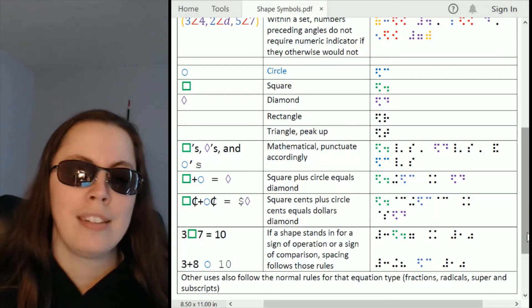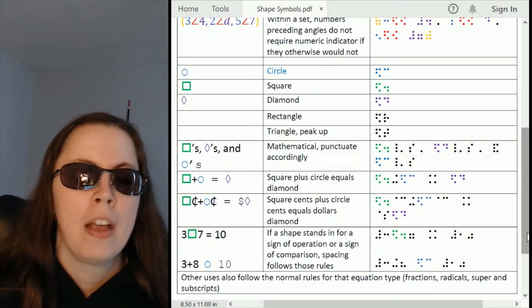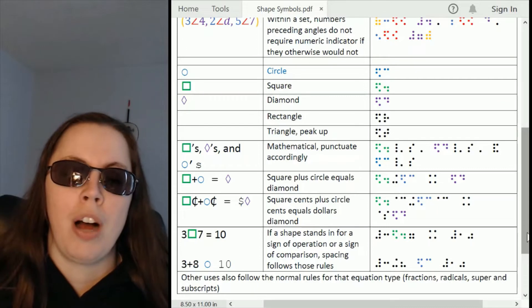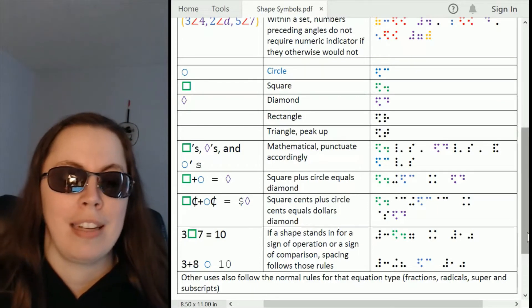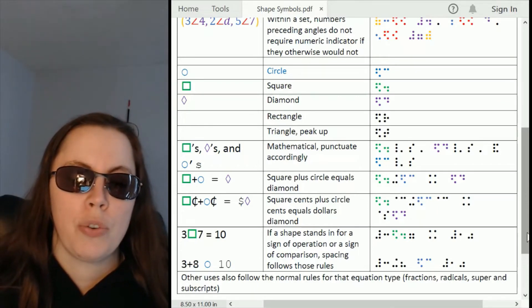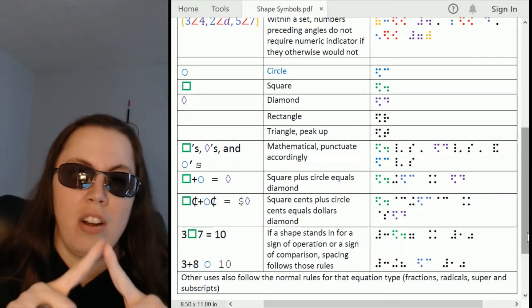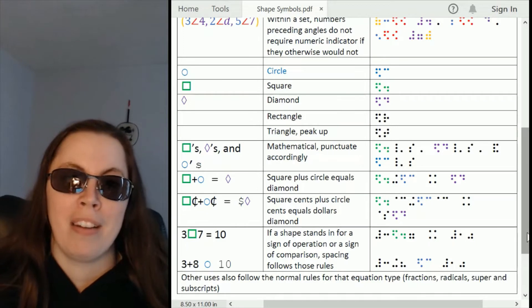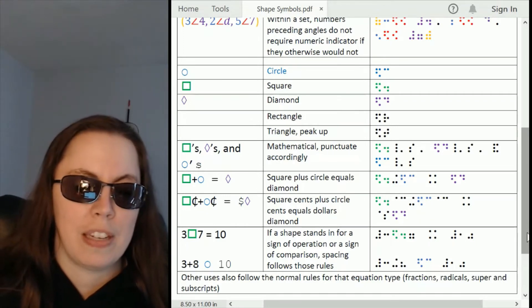Square is shape 4. Diamond is shape D. Rectangle is shape R. And you might need to draw a rectangle in on your handout because I think it's not printing for people. Triangle, when it's just a standard equilateral triangle peak up, is shape T. It does not follow the number pattern. It is T for triangle in this case.